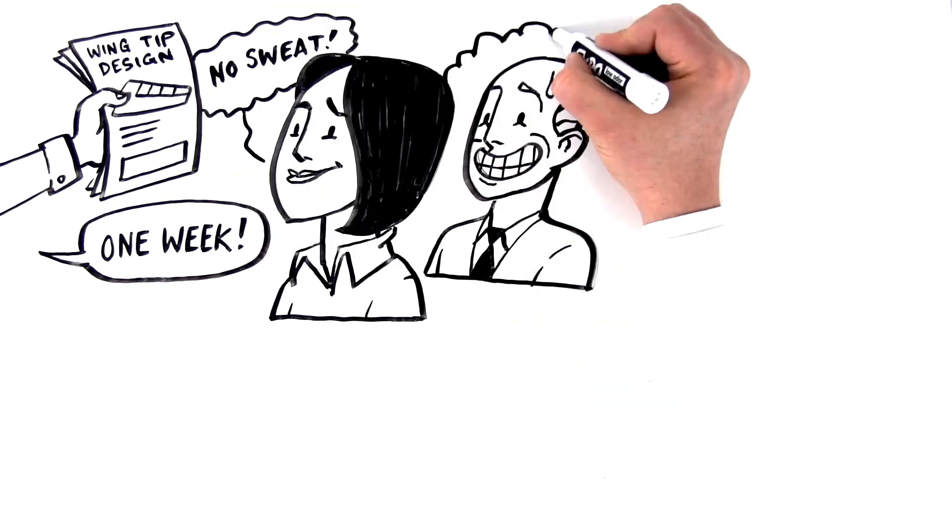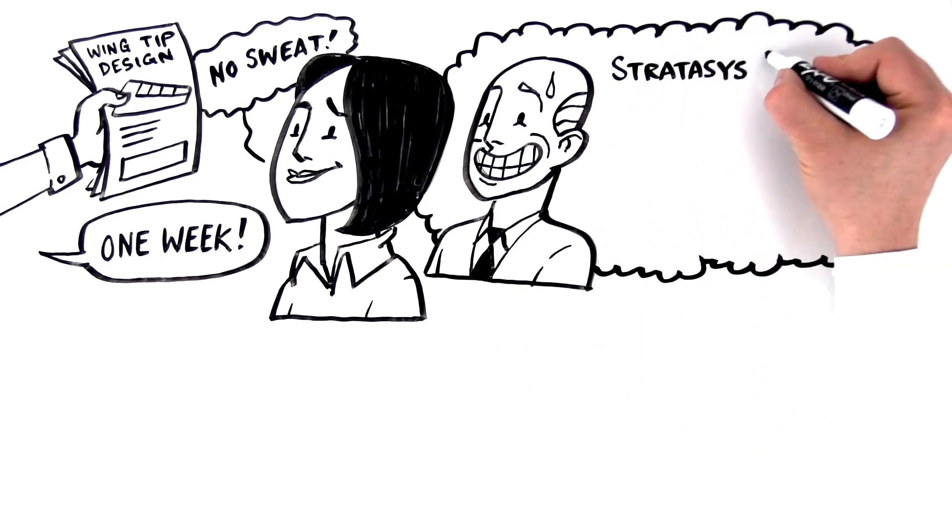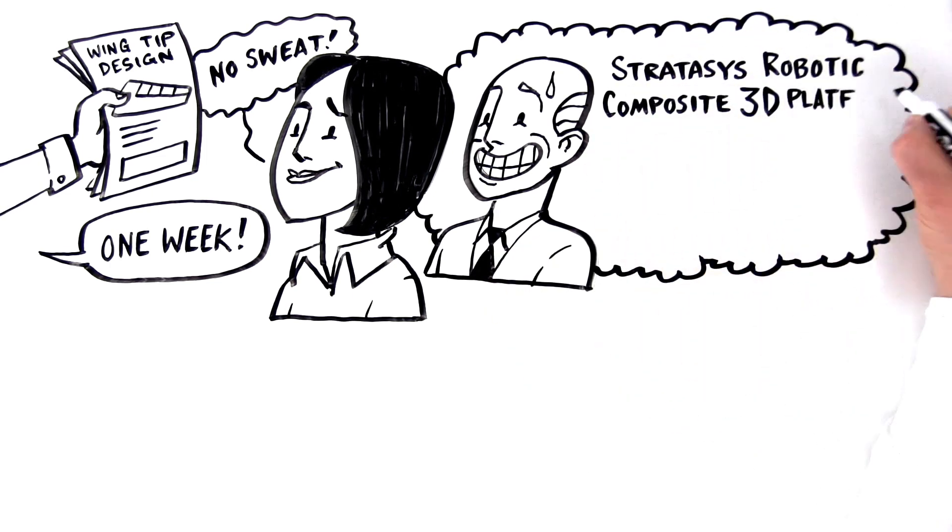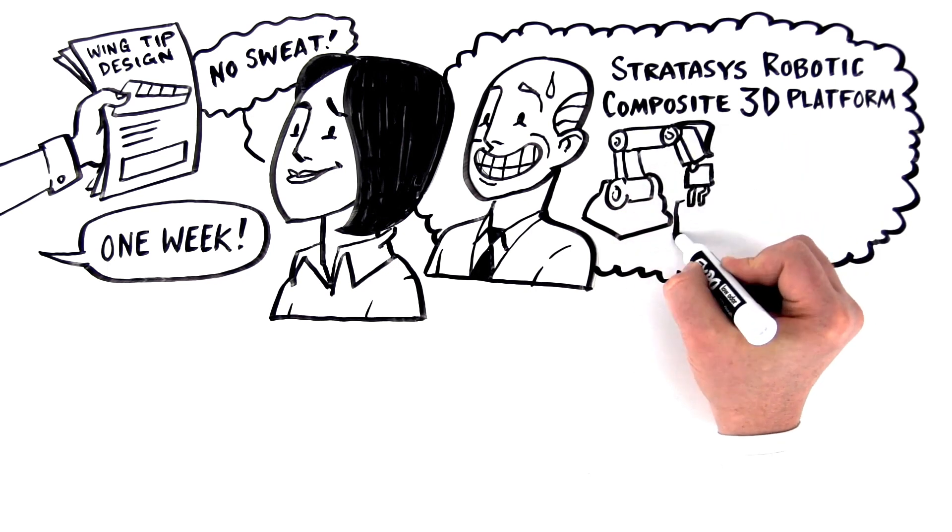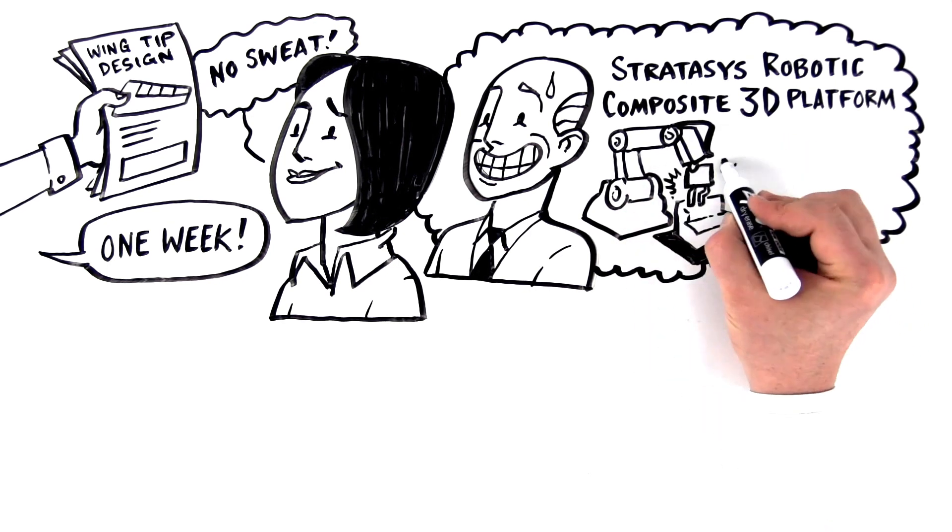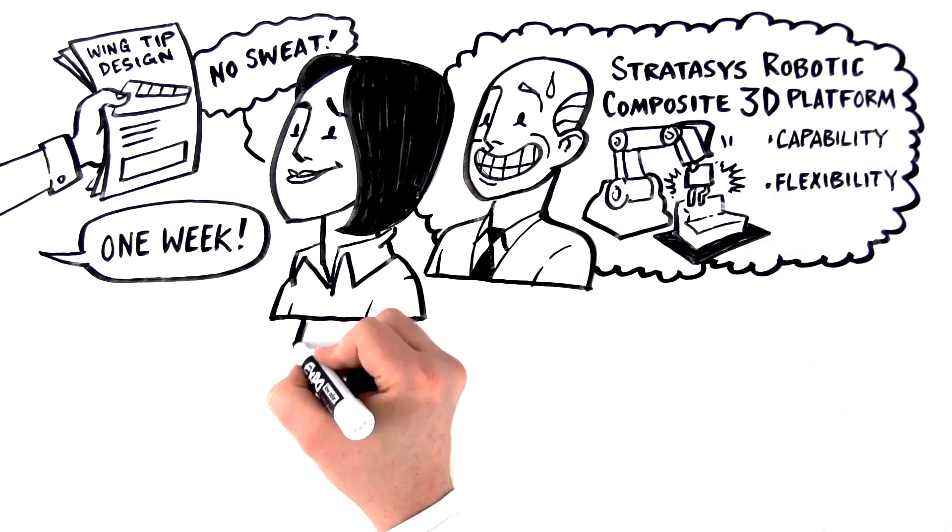No sweat, you say. That's because you invested in the Stratasys Robotic Composite 3D platform, the only composite additive manufacturing system with a scalable, multi-process architecture, giving you the capability and flexibility you need.